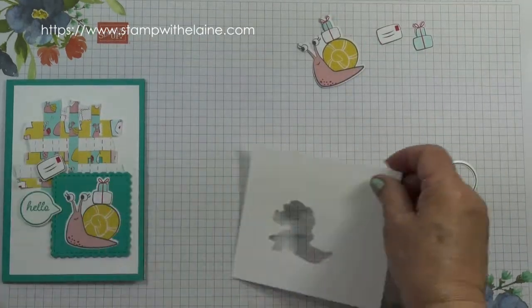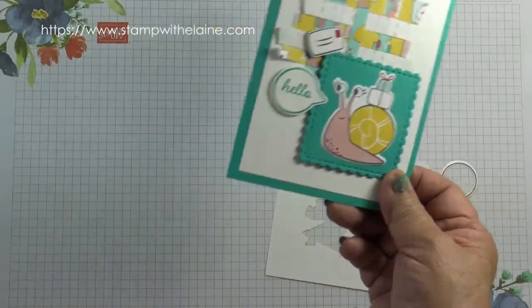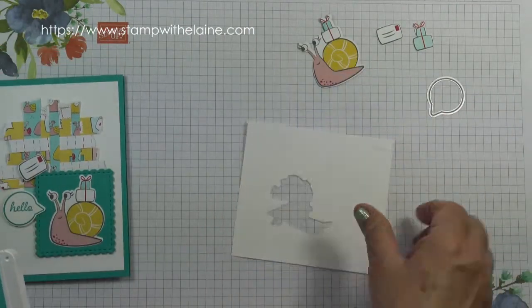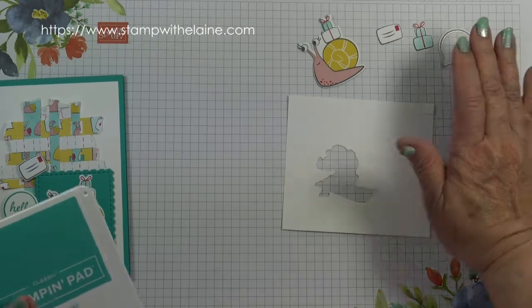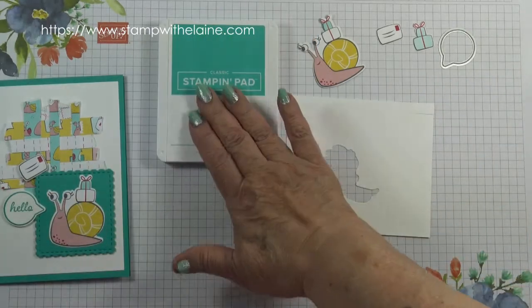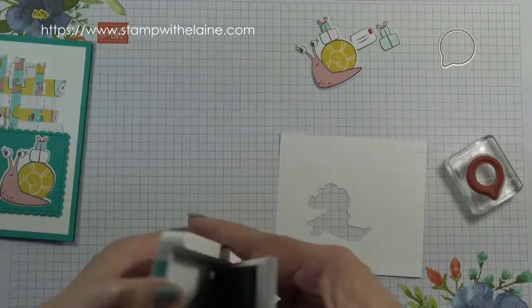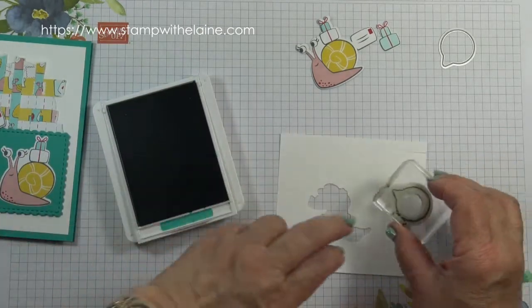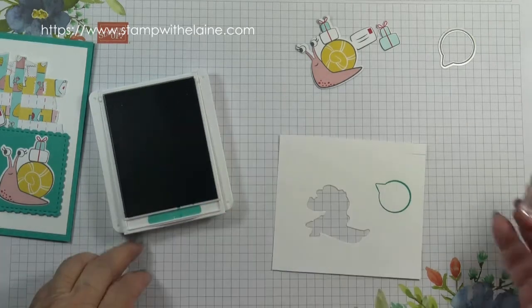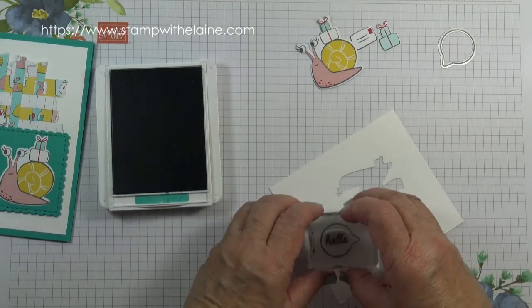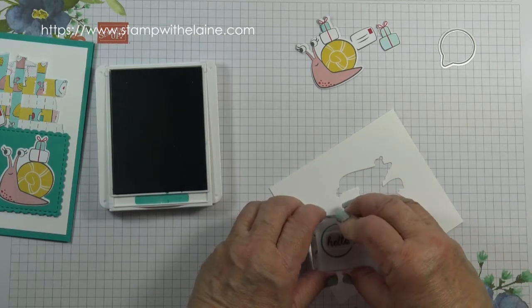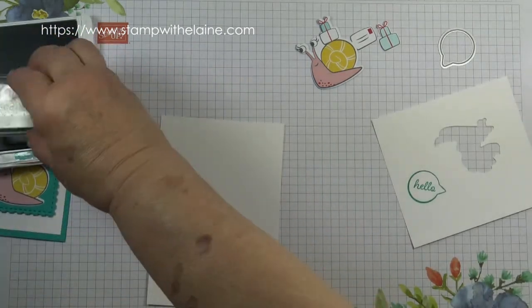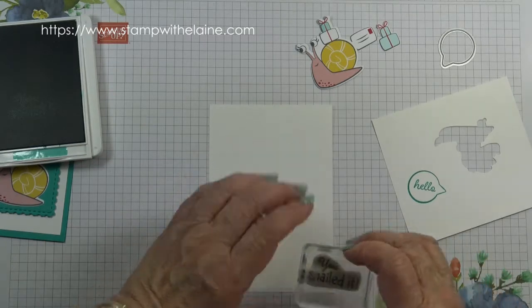Actually I changed my mind. I think I stamped this and die cut it out so we need a scrap of whisper white and the speech bubble die and some Bermuda Bay ink. Stamp that first. Change it in this direction. So let's hope that stamps perfectly. While I've got the ink pad out I'll stamp here.